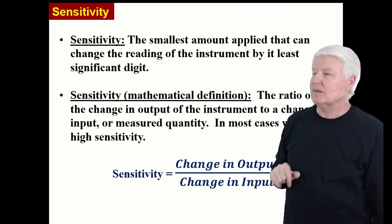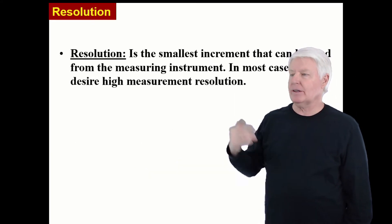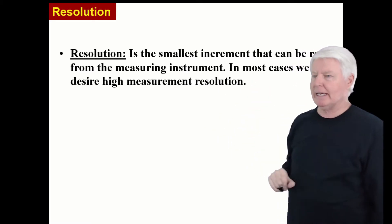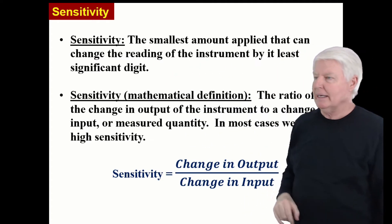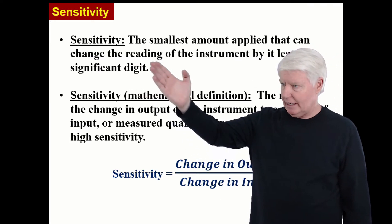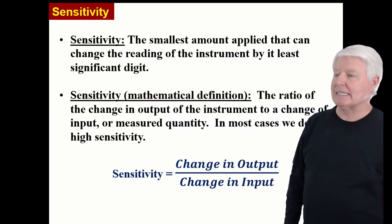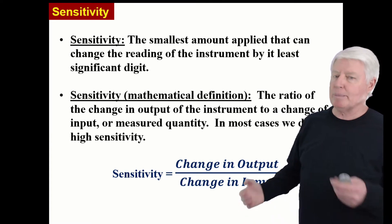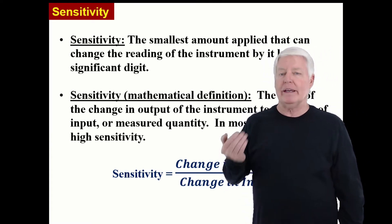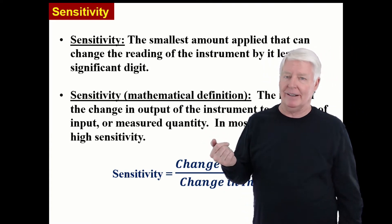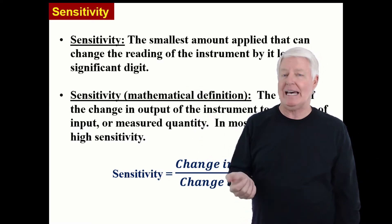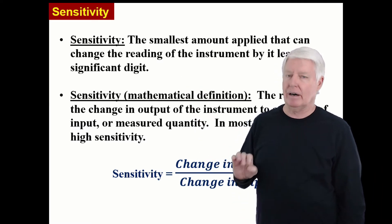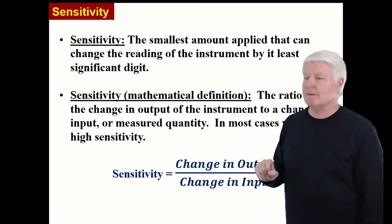Sensitivity is the smallest amount applied that can change the reading of the instrument by its least significant digit. So you can compare the two. Smallest increment that can be read from the measuring instrument versus the smallest amount applied that can change the reading of the instrument by its least significant digit. So they're pretty close and I know you're thinking, well they're the same thing because sensitivity is based on the resolution. In many cases that is the case, but not in all.